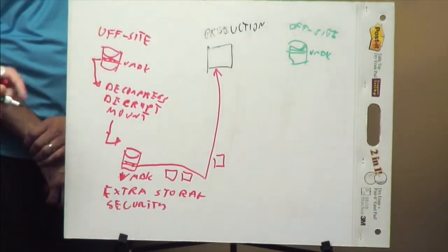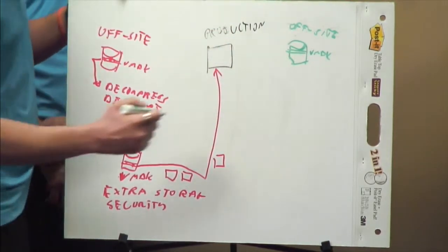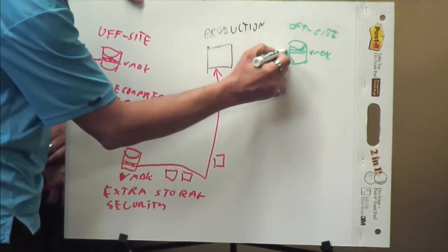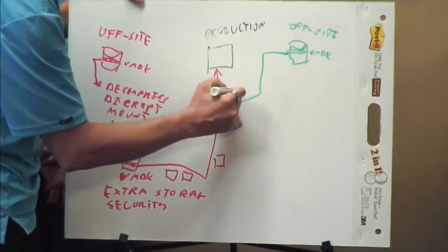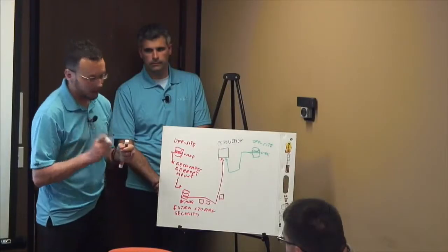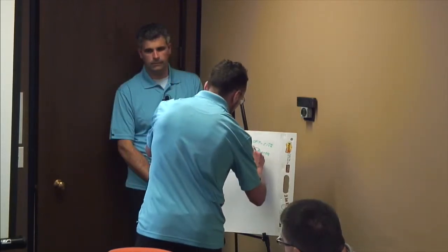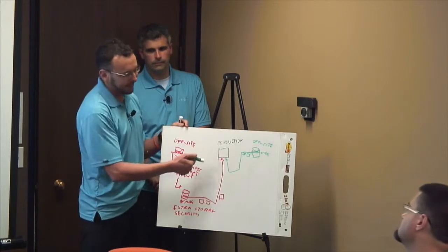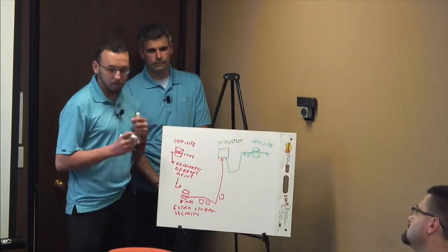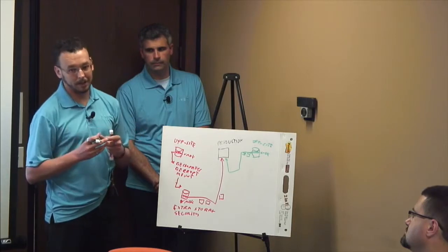Now, when you want to get a single file, this is encrypted and this is compressed. All we do, we go directly to this. We know exactly which packets contain the data for that particular file. So those packets, we don't mount nothing. We just send those packets directly to the production system. Then on the production system, those packets get decompressed, decrypted, and the file is being reconstructed there.